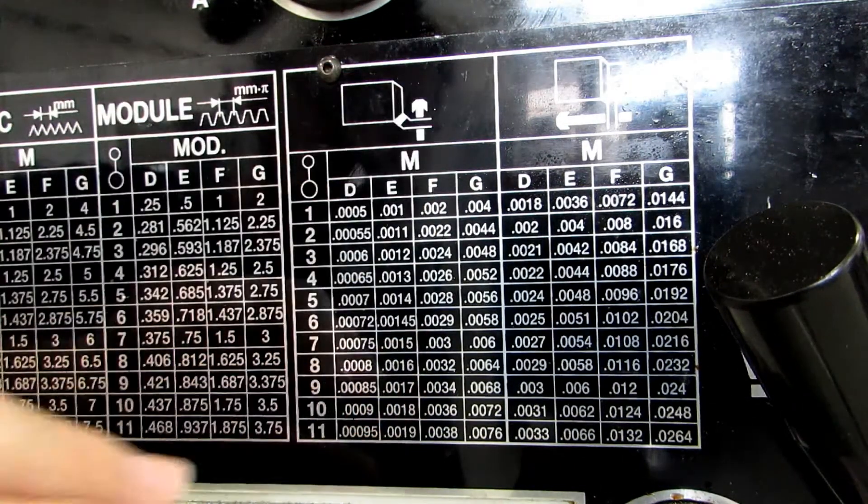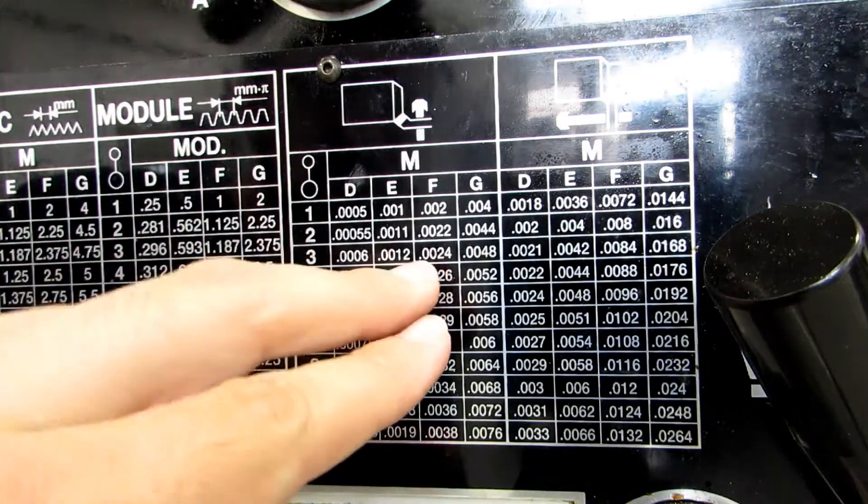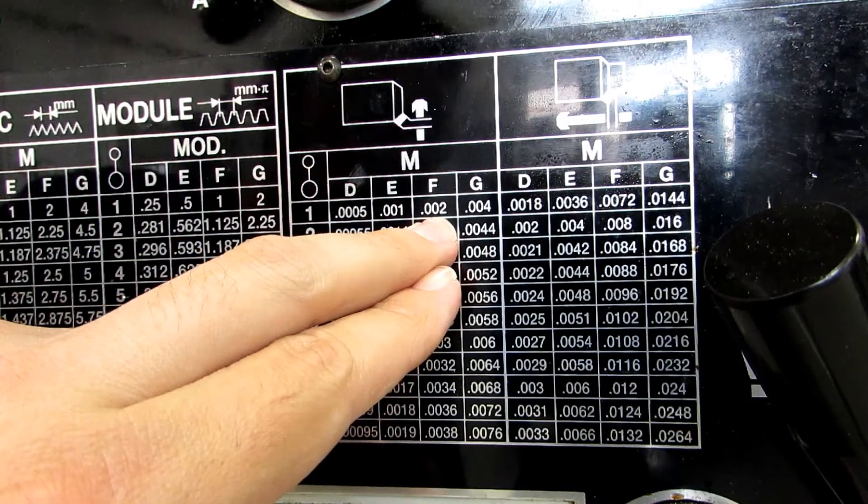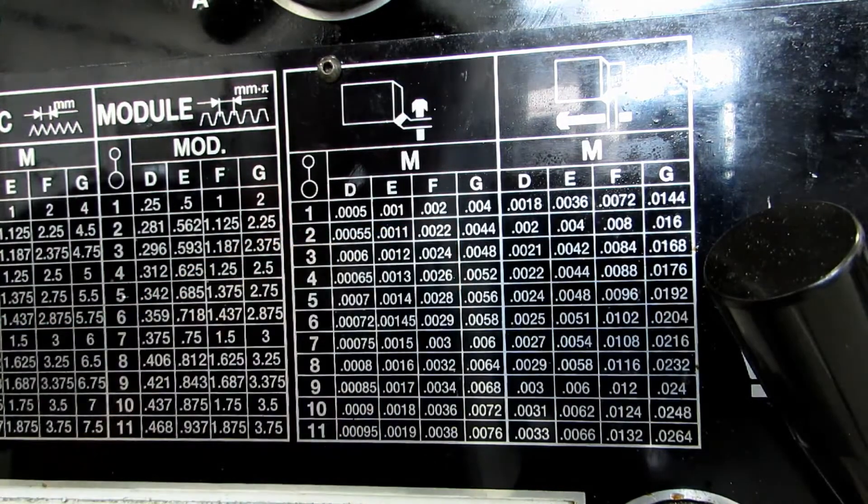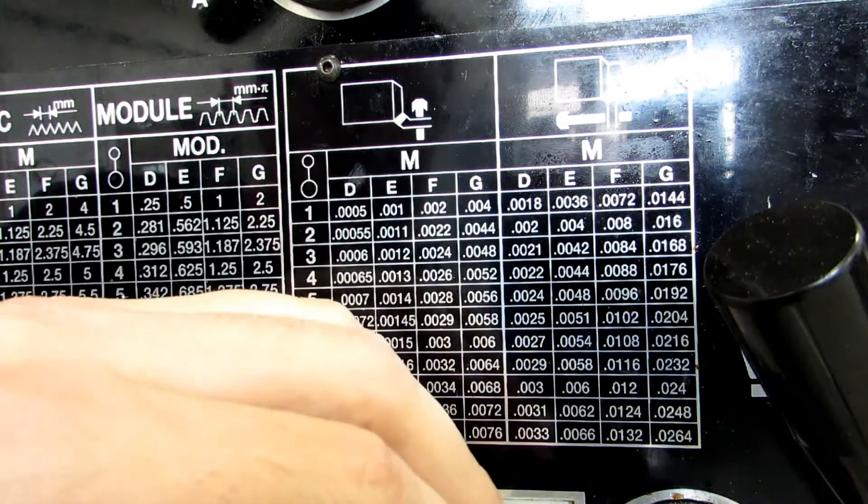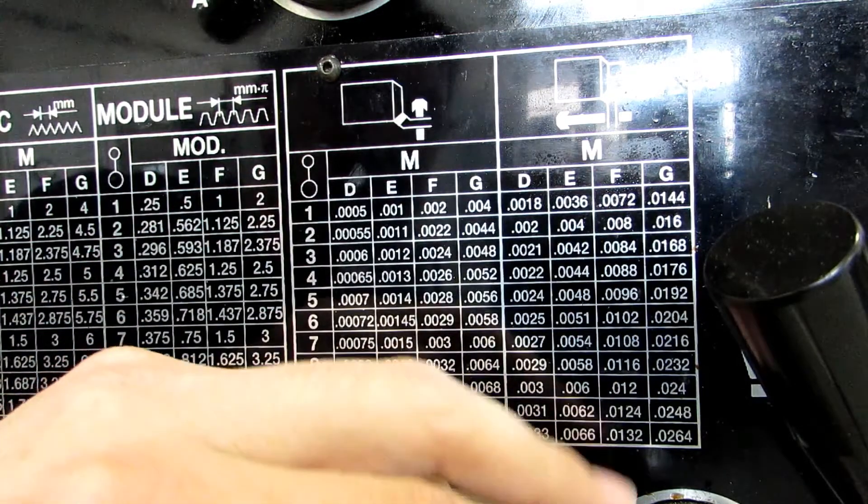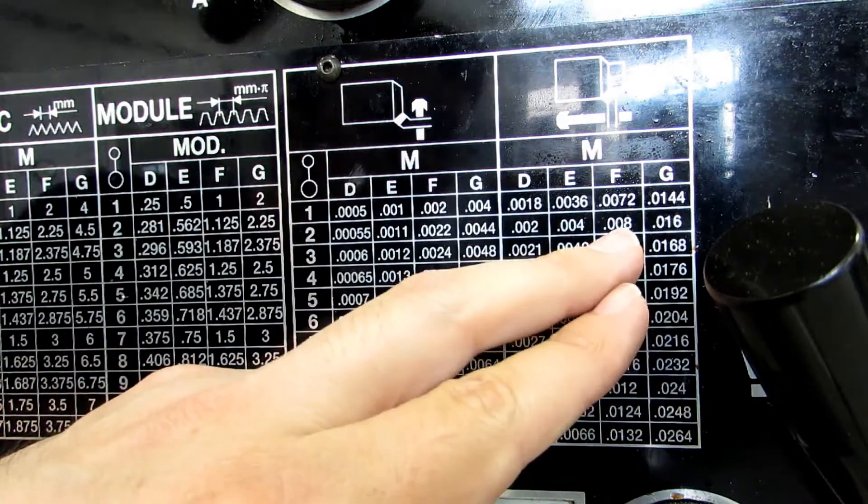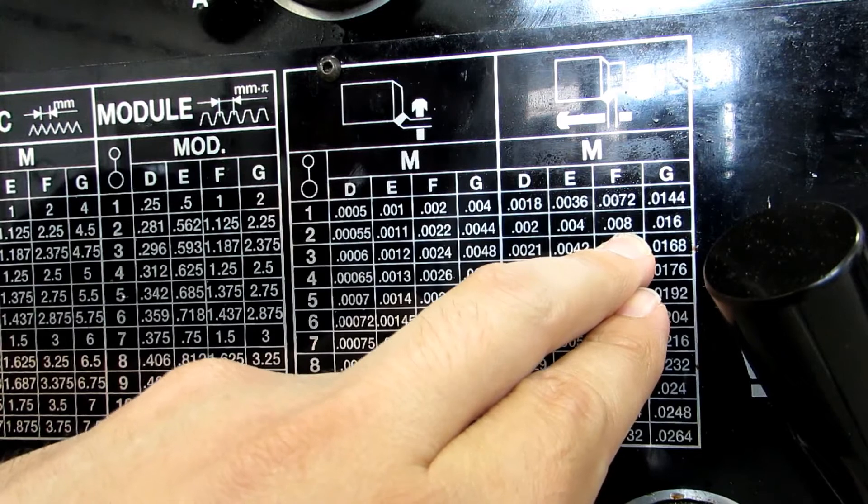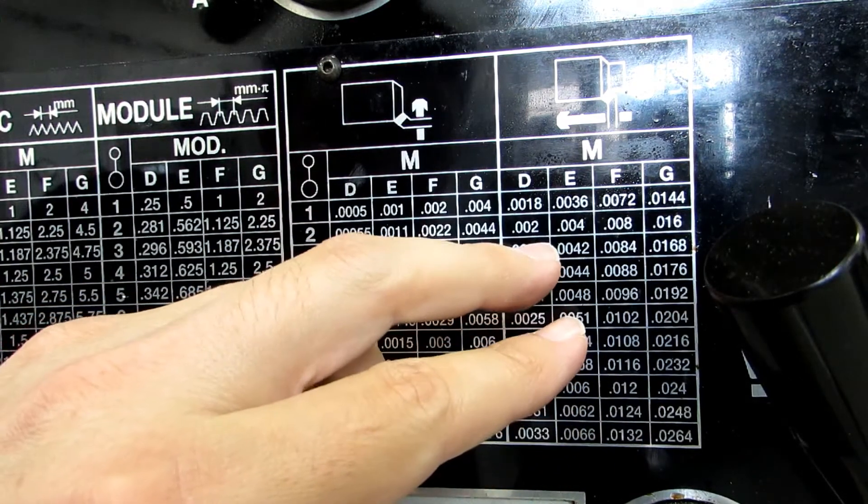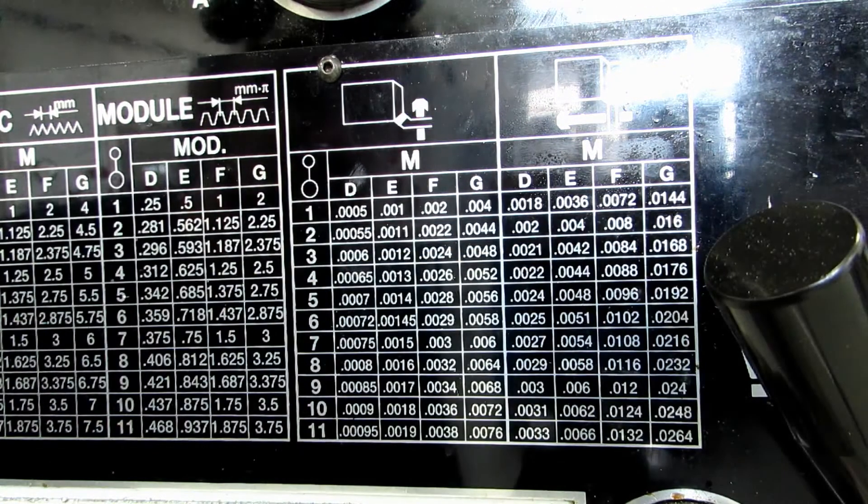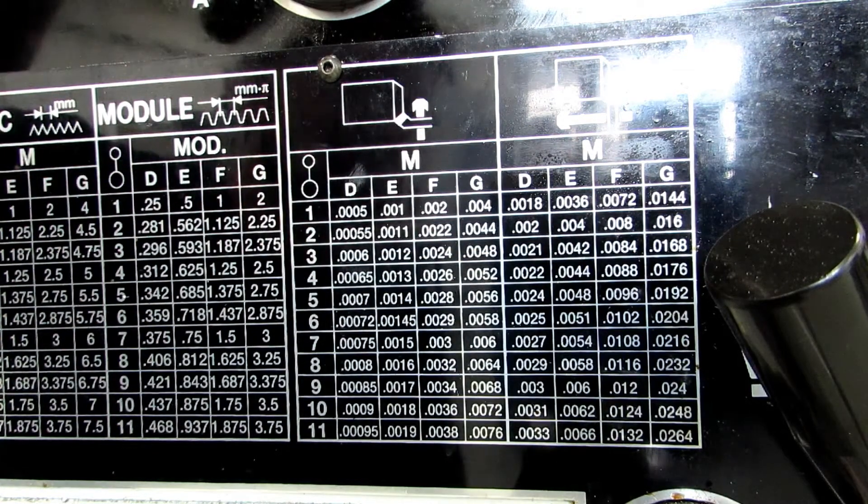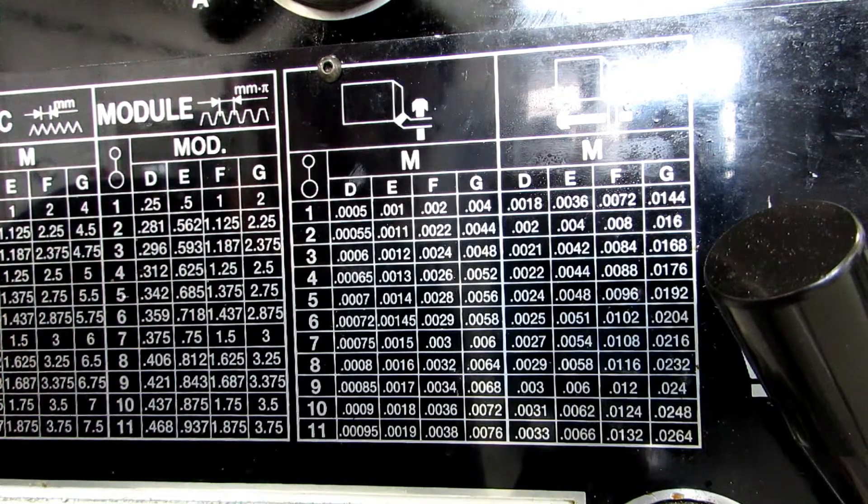So, this is just for cross feed, and if you wanted to have two thousandths of an inch per revolution feed rate, you would have to set this at F1. If you were in longitudinal feed, and let's say you wanted to do a roughing cut at eight thousandths per revolution, that would actually be at F2. And if you wanted a finishing cut at four, for instance, you would be at E2. So, that's how you read the chart, and then you would just move the handles depending on where they needed to be.